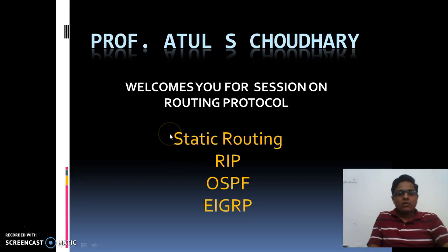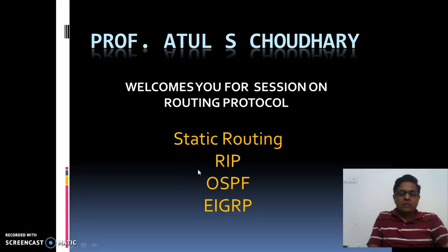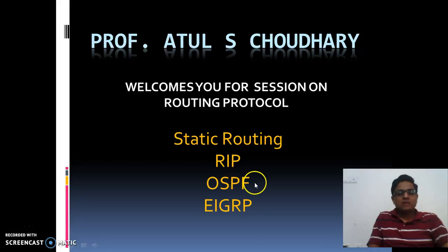In theory lectures we have already discussed various ways of doing it. One protocol that can be used for routing is static routing, in which we manually write a static path. Then we studied RIP — Routing Information Protocol — then Open Shortest Path First protocol, and also the Extended Interior Gateway Routing Protocol. These are the four different techniques we need to discuss and demonstrate.